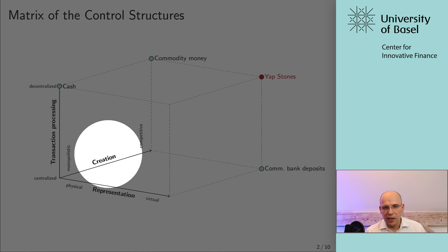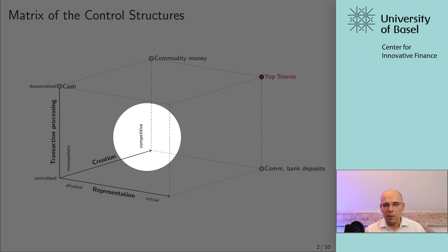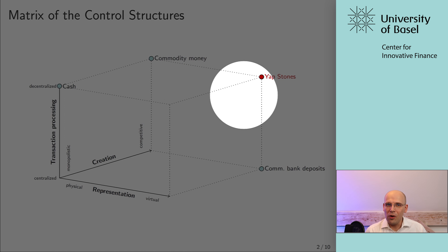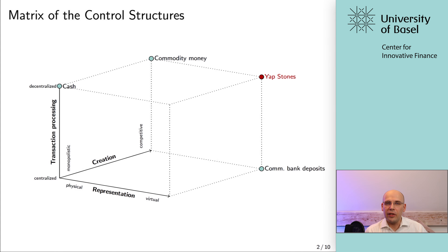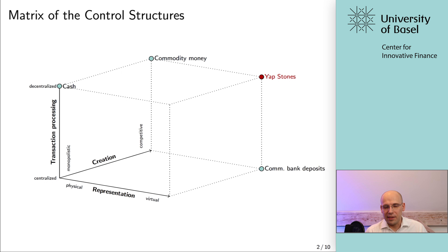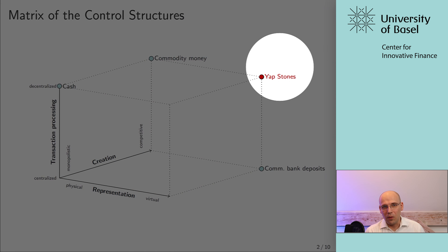Last but not least, the creation of Yap stones: they built canoes and paddled to a different island called Palau, and anyone could carve out these stones — so it's really a competitive creation process. And these are exactly the properties of the Bitcoin network. Bitcoin, as you will see later on, will also be in this same corner of the framework.